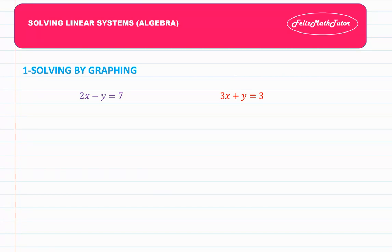We are trying to find all points that give both equations a solution at the same time. Let me remind you how we were graphing a linear equation. Let's say we have two equations, a purple and a red equation.